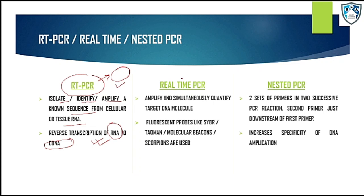Now let's come to real-time PCR. Real-time PCR is basically used to amplify and simultaneously quantify the target DNA molecule. It cannot distinguish between sequences but it can quantify and amplify at the same time a target DNA molecule by using certain fluorescent probes like SYBR Green, Taqman, Molecular Beacons, and Scorpions.